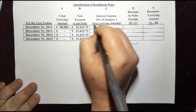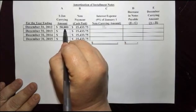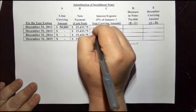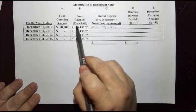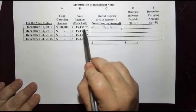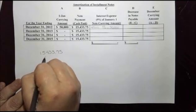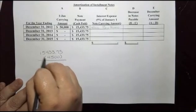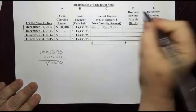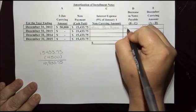To determine this, we take 9% and multiply it by $50,000, and we get $4,500. So $4,500 is the 9% interest on $50,000. We then take that $4,500 away from $15,433.75, and we determine that $10,933.75 of this payment is going to reduce the principal amount of the installment note.